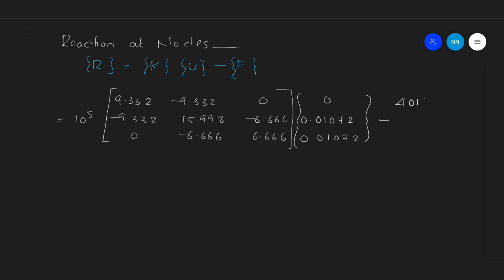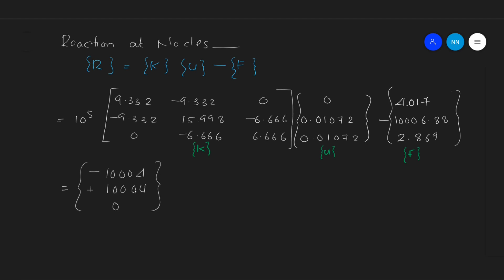Multiplying the stiffness matrix and displacement matrix first, the product KU gives −100004, +100004, and 0. Subtracting the force matrix from this product, the result Ku − F gives −100008.017 N, −2.96 N, and −2.869 N.